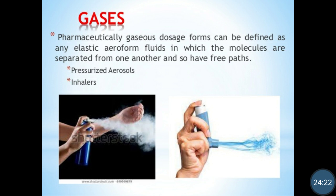Here we have completed the solid dosage forms — covering tablets, capsules, powders, and granules. The next type of dosage form depending on physical form is gases. Pharmaceutically, gaseous dosage forms can be defined as any elastic aeroform fluids in which the molecules are separated from one another. These are pressurized dosage forms — under pressure they convert into fluid, and when we release the pressure they convert into gas. The well-known example is LPG gas. Medicinal aerosols, steels, and deodorants are types of gaseous dosage forms.